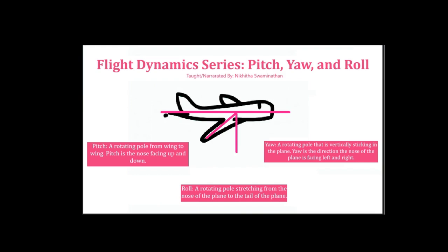This is the most confusing part — remembering the difference between roll and yaw. Roll is the literal plane being able to turn left and right, while yaw is the direction the nose is facing left and right. So yaw is the direction the nose of the plane is facing left and right.